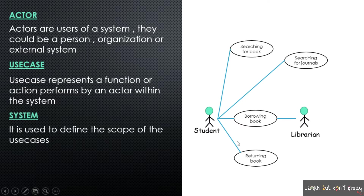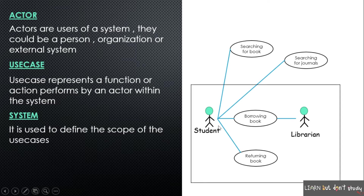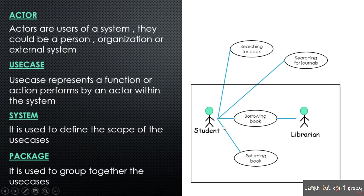Next, system or boundary. We highlight the system boundary, which is represented as a box enclosing the relevant processes. Next is Packages: in use cases, we group related use cases together. For example, searching for a book, searching for a journal, and searching operations can be grouped into one package.